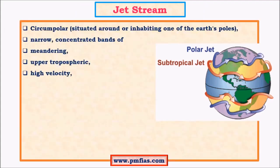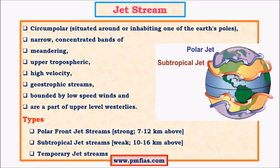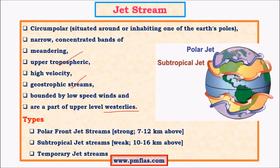Now let us look at the definition of jet stream. Jet streams are circumpolar, narrow, meandering, upper tropospheric winds which blow at very great velocities. They are geostrophic winds where they blow perpendicular to the pressure gradient force. They are bounded by lower speed winds and are part of upper level westerlies. There are three kinds of jet streams: polar and subtropical, which are called permanent jet streams, and temporary jet streams.